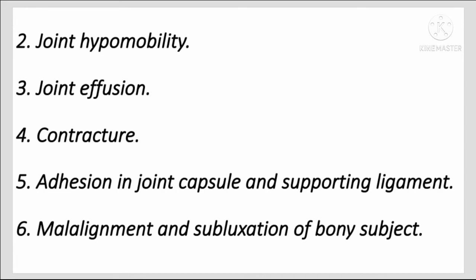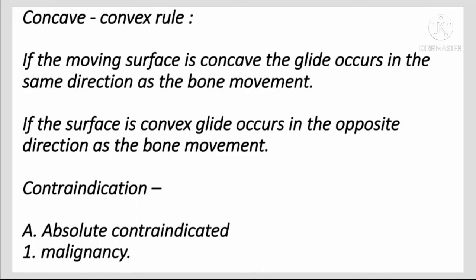Additional factors include adhesion in the joint capsule and surrounding ligaments, and mal-alignment or subluxation of bony structures — meaning imperfect alignment or partial dislocation of bone. Concave convex rule: if the moving surface is concave, the glide occurs in the same direction as the bone movement.